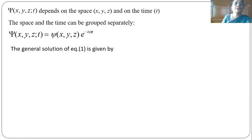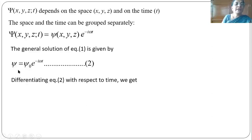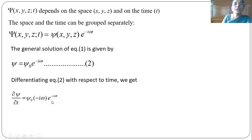Let us now find the general solution for this equation. Consider psi = psi₀ · e^(−iωt), where psi₀ is a constant. Now let us differentiate this equation with respect to time. So ∂psi/∂t = psi₀ · d/dt[e^(−iωt)]. When we differentiate, we find minus iω multiplied by e^(−iωt).